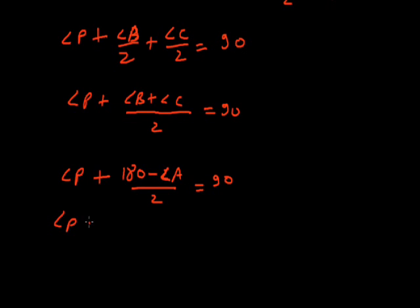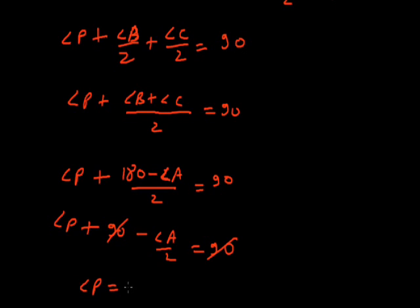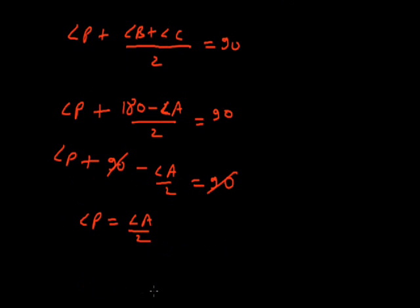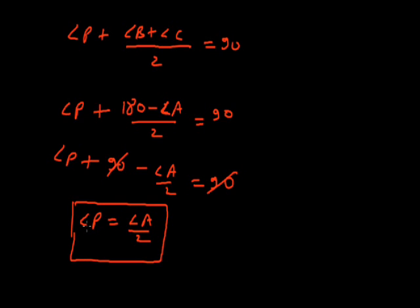Angle P plus 90 minus A/2 equals 90. The 90s cancel, giving angle P equals A/2. So we have shown that angle P equals half of angle A.